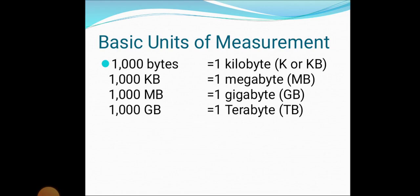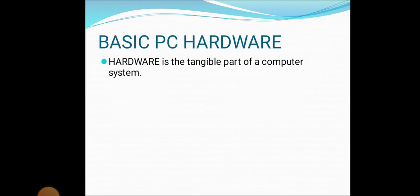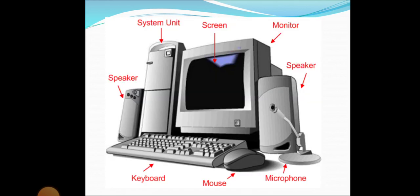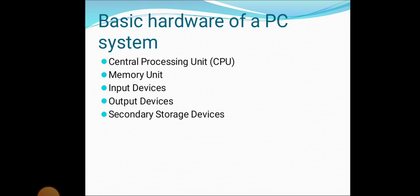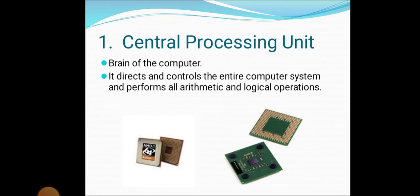Next, we are going to see hardware. What is hardware? Hardware is the tangible part of a computer system. These are the parts of hardware: it contains central processing unit, memory unit, input and output devices, and secondary storage devices. The central processing unit is the brain of the computer. It controls the entire computer system and performs all the arithmetic and logical operations.